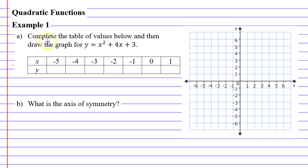Question A says complete the table of values below and then draw the graph for y equals x squared plus 4x plus 3. So if we look at the first column here where x is negative 5, we need to substitute negative 5 into our equation here.